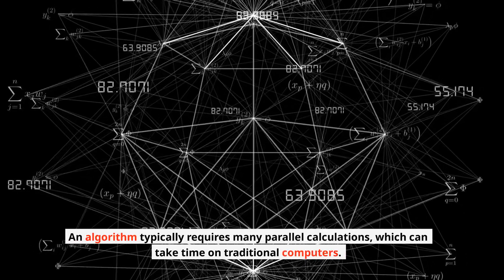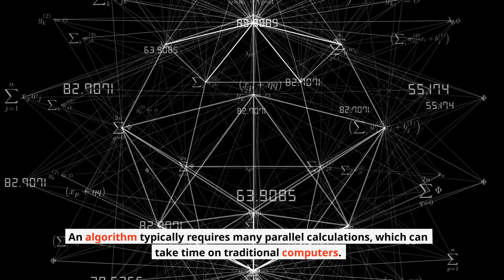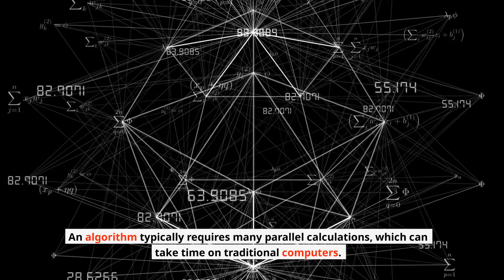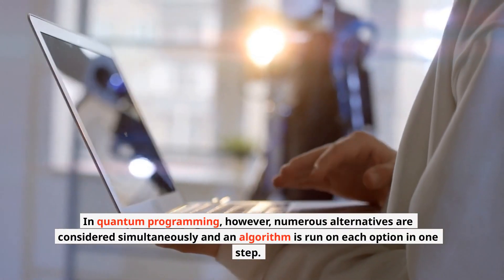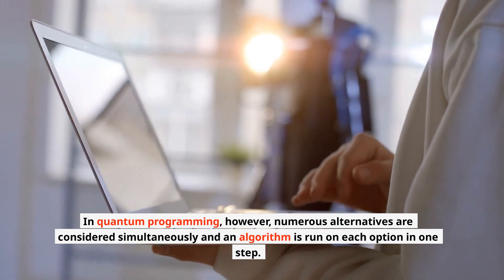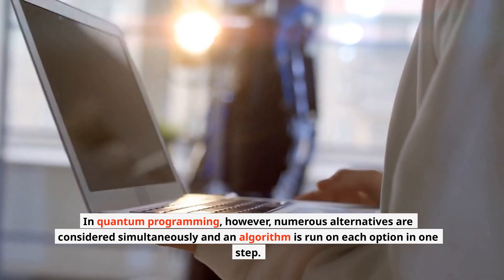An algorithm typically requires many parallel calculations, which can take time on traditional computers. In quantum programming, however, numerous alternatives are considered simultaneously and an algorithm is run on each option in one step.